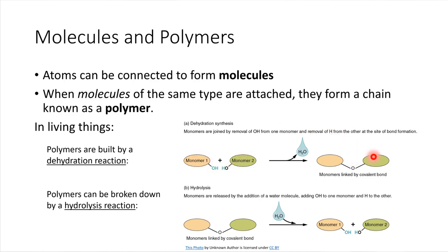So in the end, what we have is the two monomers have been connected by a new covalent bond that involves that oxygen. So that's an example of a dehydration reaction. Polymers in general can be formed by dehydration reactions, and this is how polymers are built in living systems.